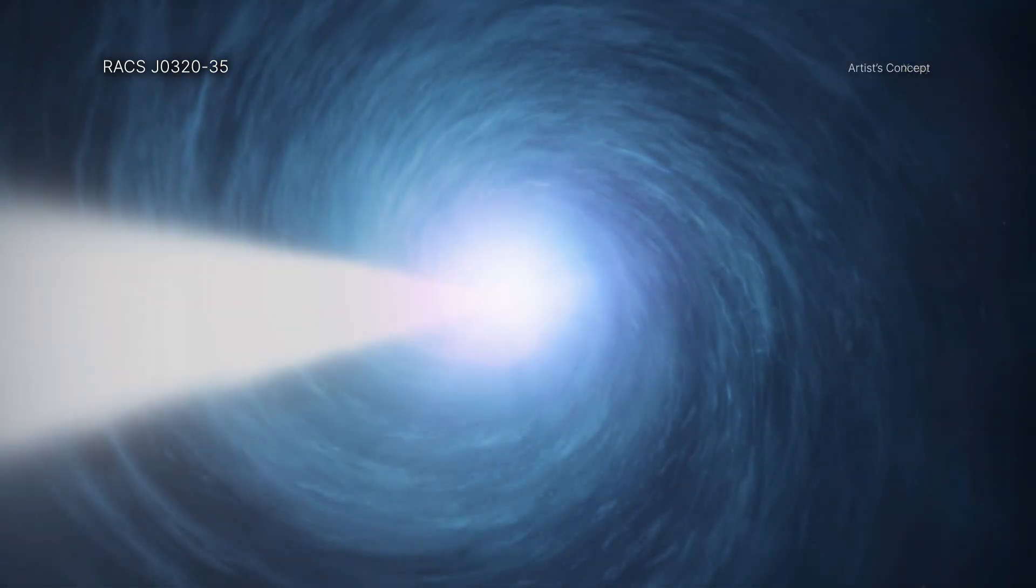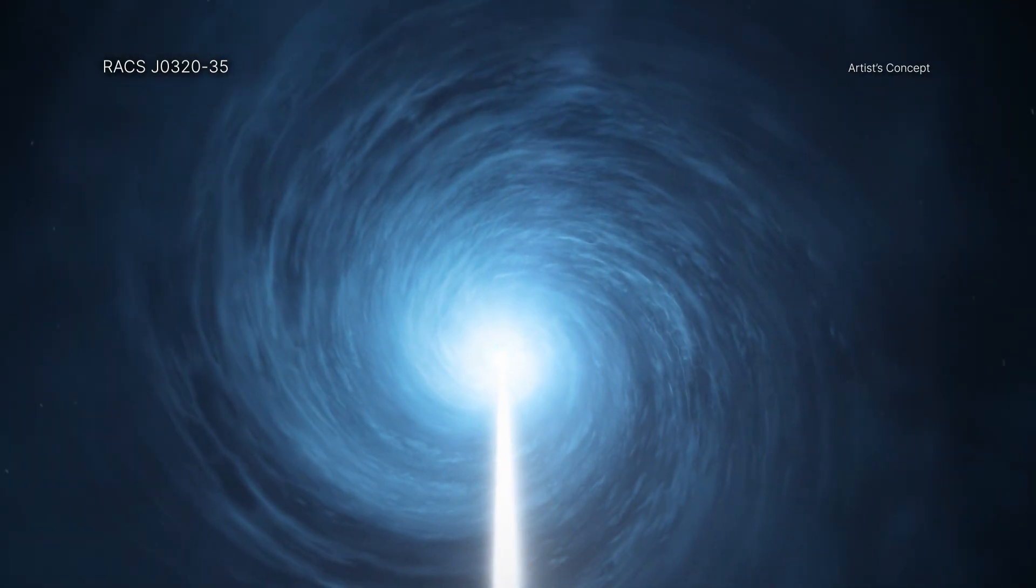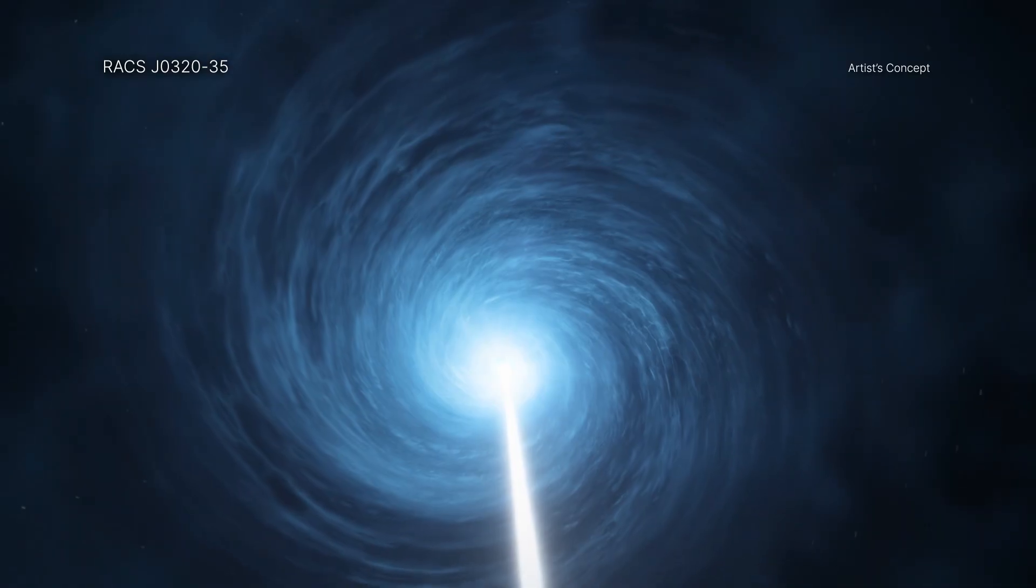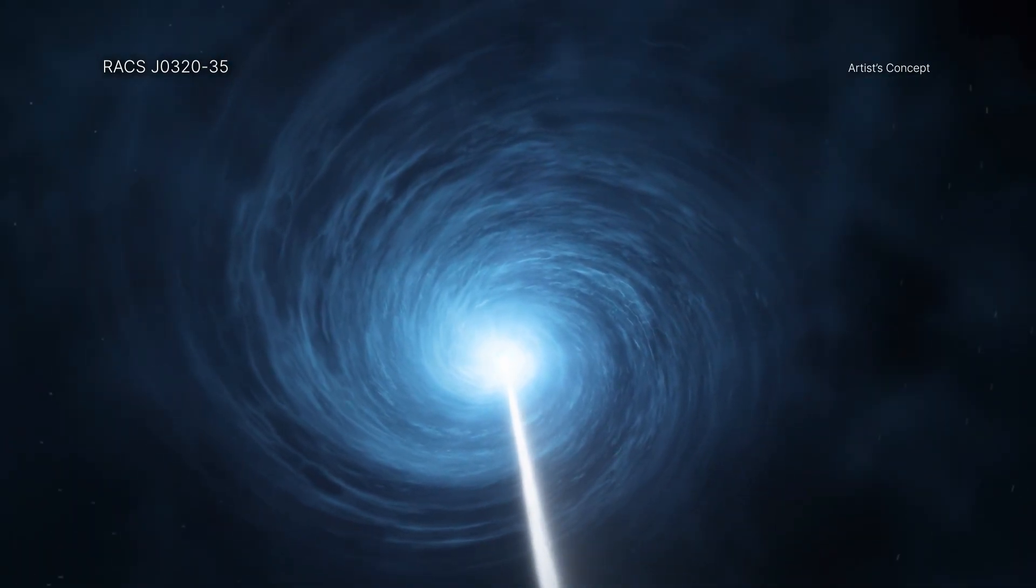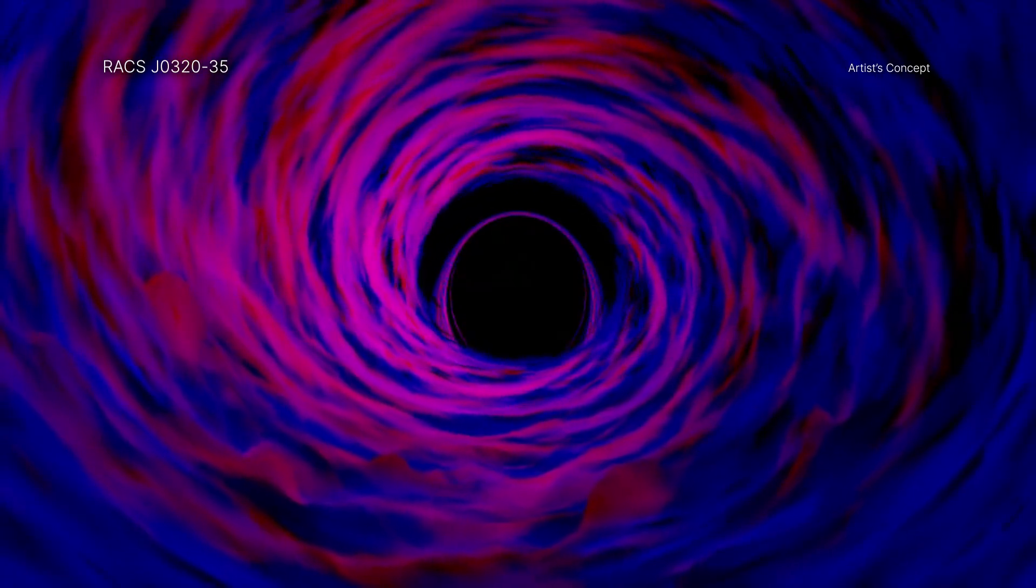It is producing more x-rays than any other black hole seen in the first billion years of the universe. The black hole is powering what scientists call a quasar, an extremely bright object that outshines entire galaxies. The power source of this glowing monster is large amounts of matter funneling around and entering the black hole.